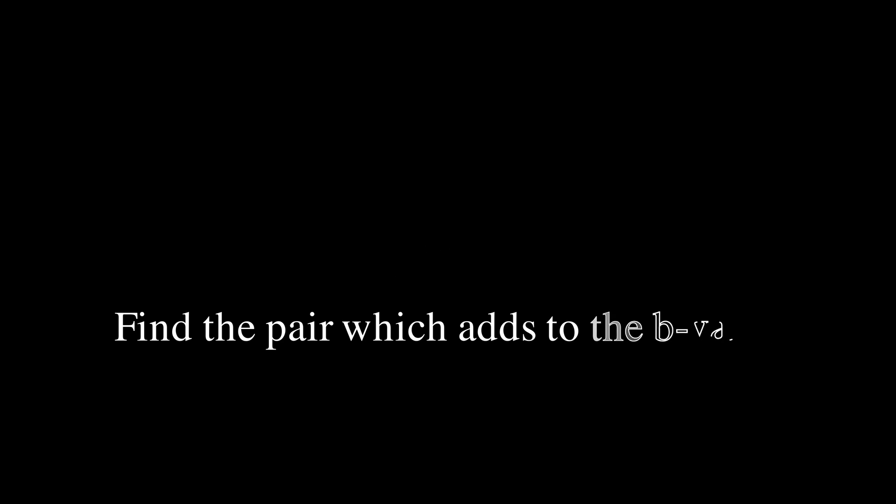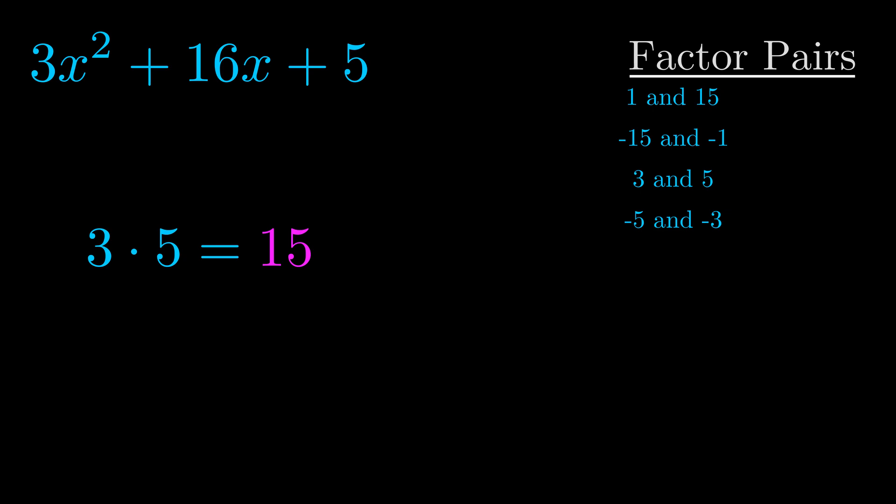The b value is the coefficient on the x term. That's the middle term, the one that we haven't done anything with yet. And really this is the only factor pair that we need.